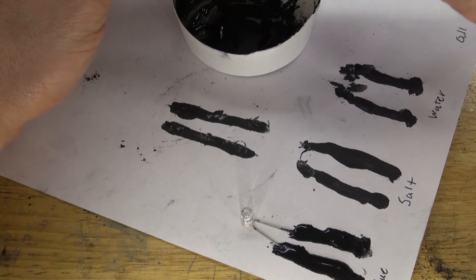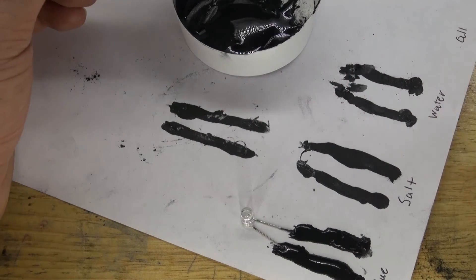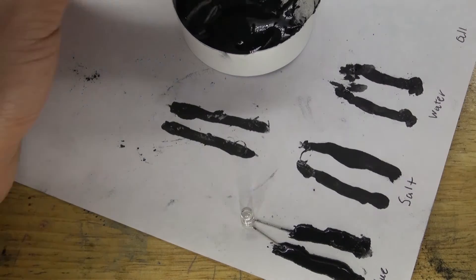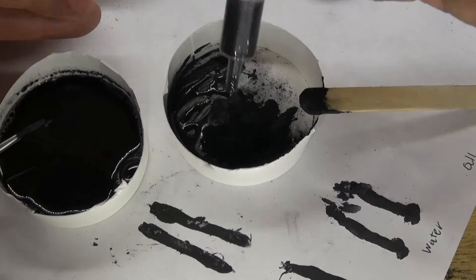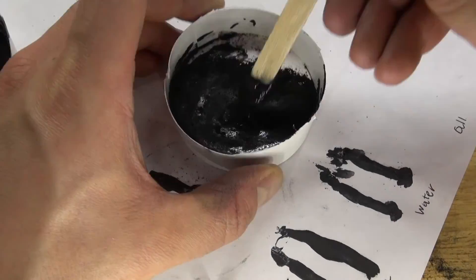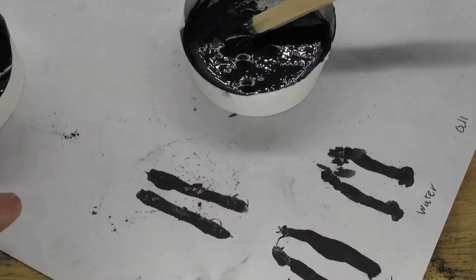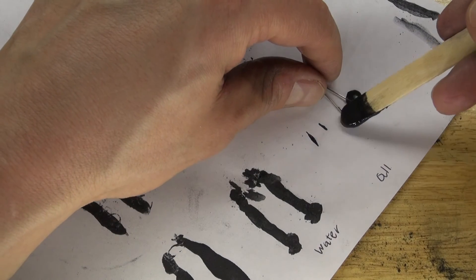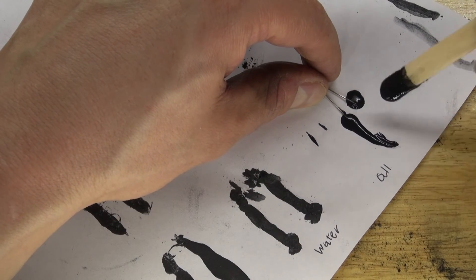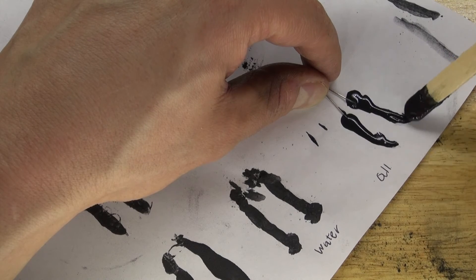And now it's time to test out the fourth method. Let's combine everything together. Basically, this contains salt, distilled water, glue, and dish soap. So only five ingredients. Mix it all together, paint down the LED, and paint two lines. Hmm, this looks actually very clean and very nice.